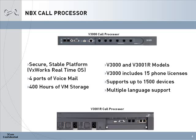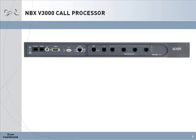The NBX call processor includes 4 ports of voicemail and 400 hours of voicemail storage. There are two NBX call processor models: the V3000 and the V3001R redundant system. The main difference is that the V3000 is bundled with 15 phone device licenses and has built-in trunking ports. The NBX V3000 is a one-rack unit device. It comes with four FXO trunk ports for POTS or analog trunk lines — the same type of phone line that you would have at home.